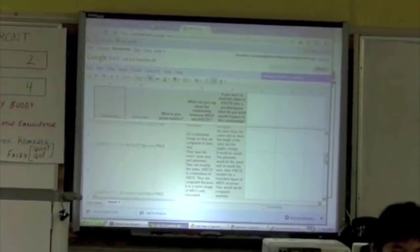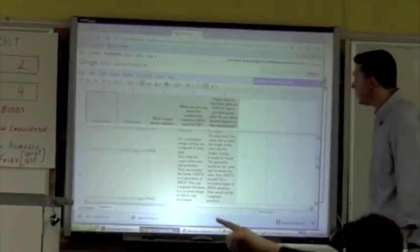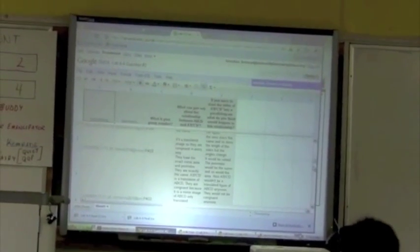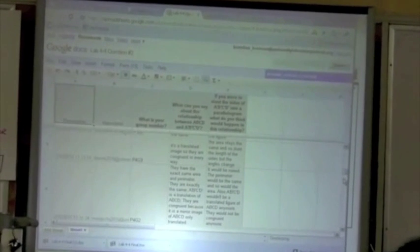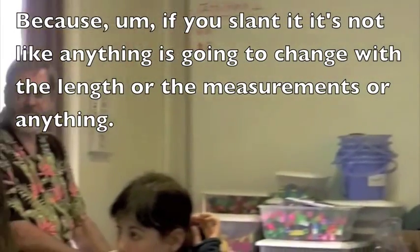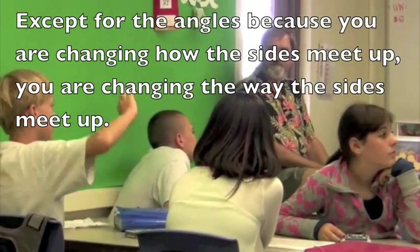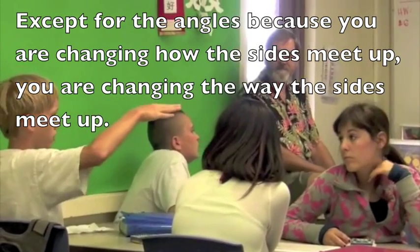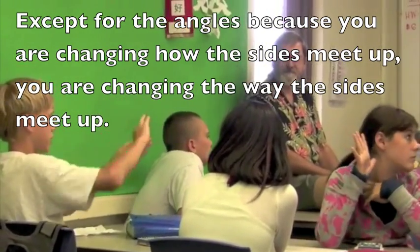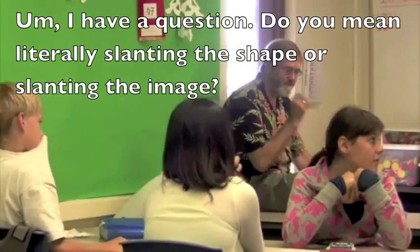Okay, so I'm looking at some stuff there. Group three, you guys said that when you slam the sides of ABCD prime, the area stays the same — so there's a length of the side, but the angles change. Why do you think that? Because if you slant it, it's not like anything is going to change with the length or the measurements or anything, except for the angles.